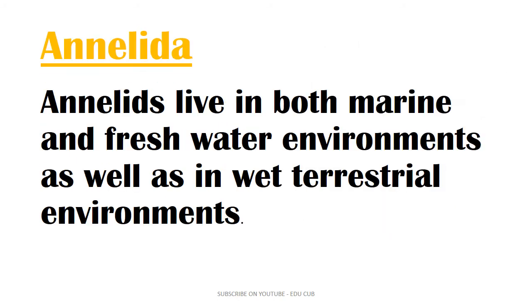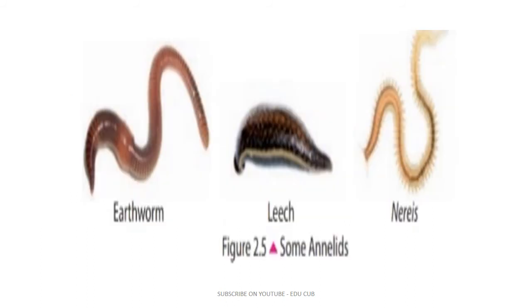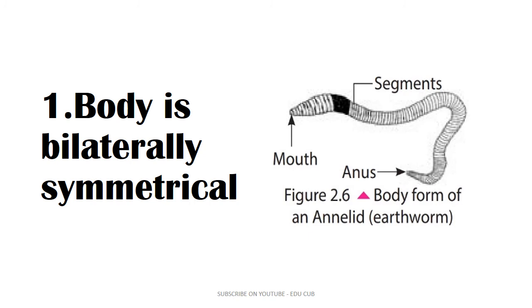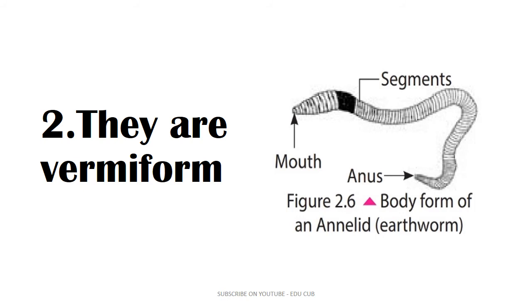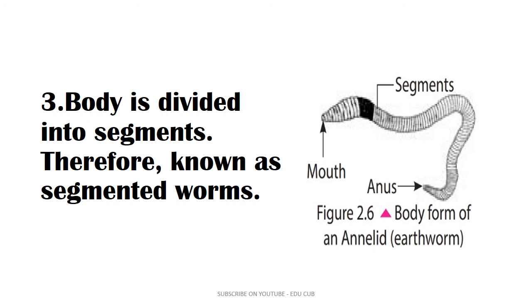The next group is Annelida. Annelida live in both marine and freshwater environments as well as in wet terrestrial environments. Examples include: earthworm, leech, and nereis. The body of Annelida is bilaterally symmetrical — if the body can be divided into two equal halves along one axis, it is bilaterally symmetrical. They have a worm-like body shape, and the body is divided into segments; therefore, they are known as segmented worms.